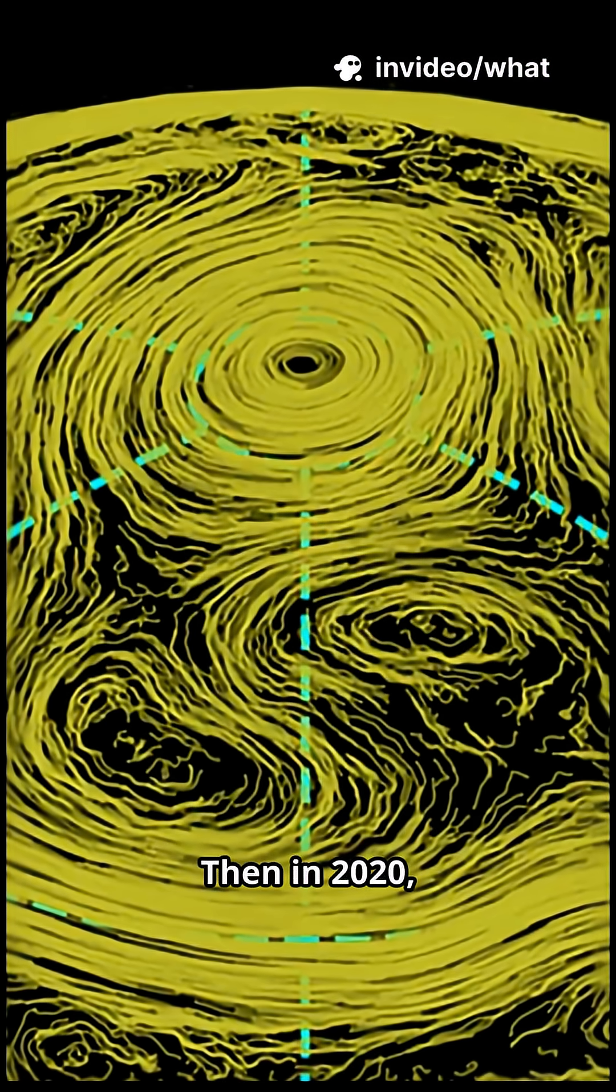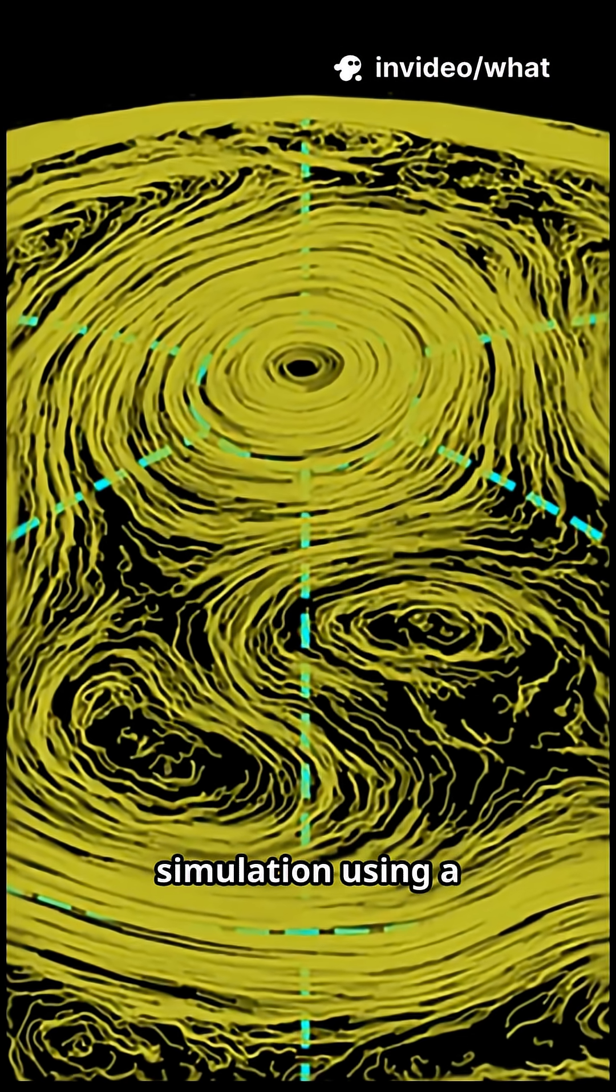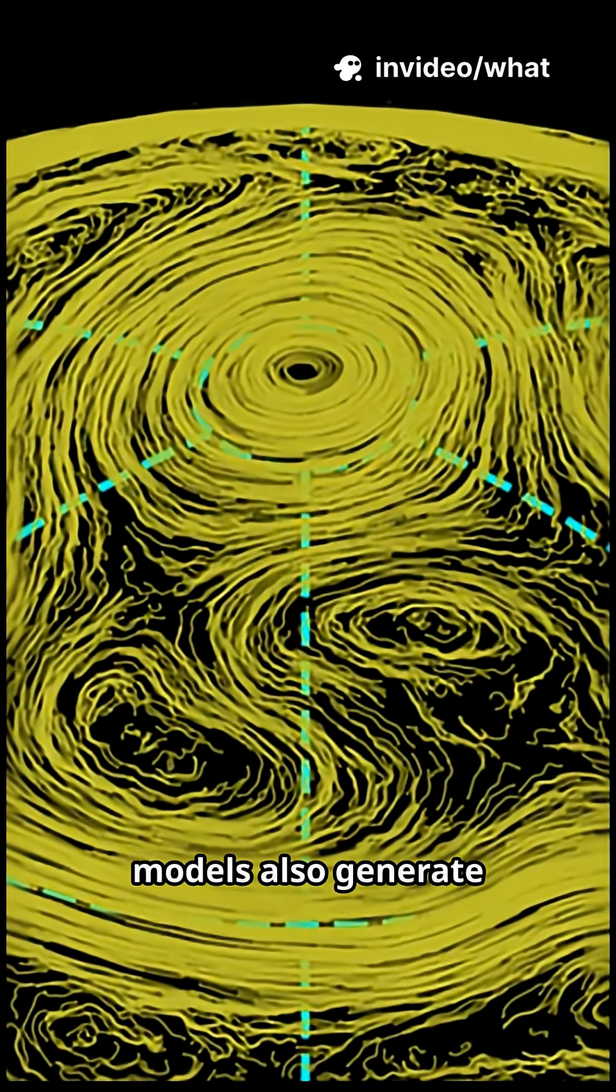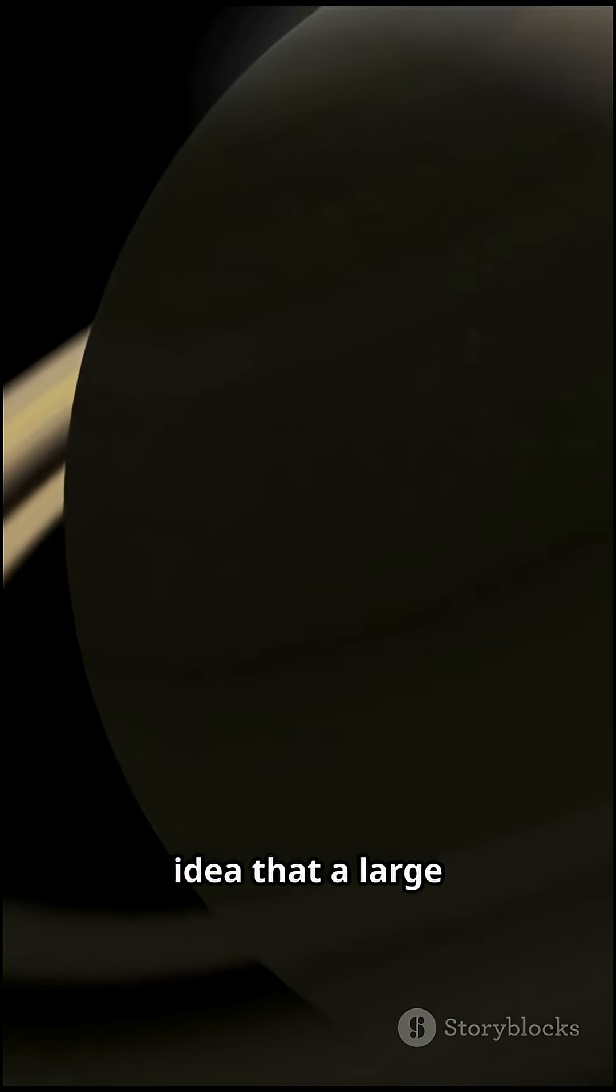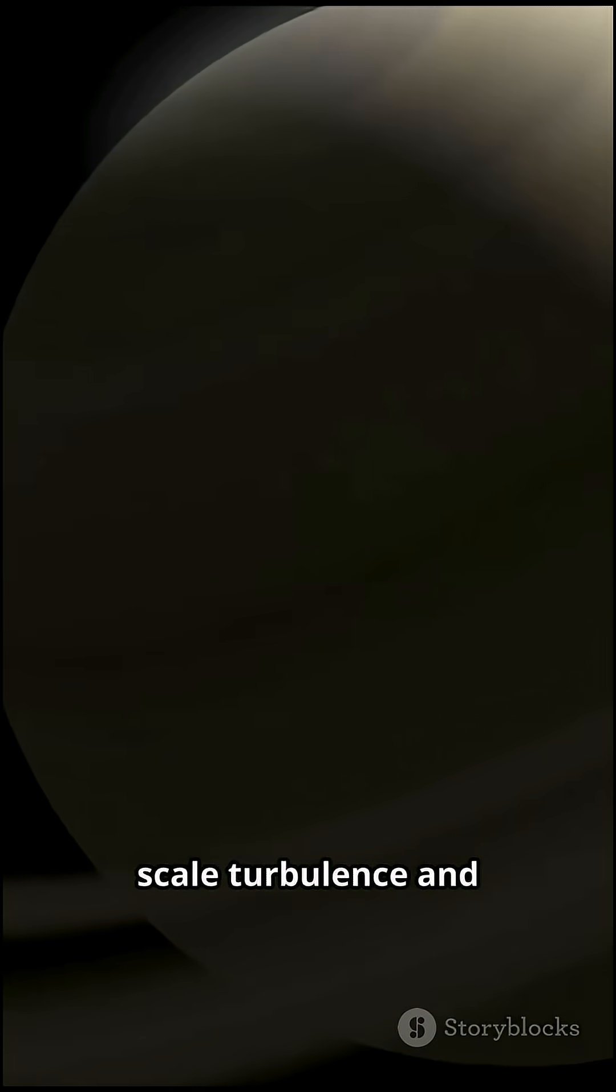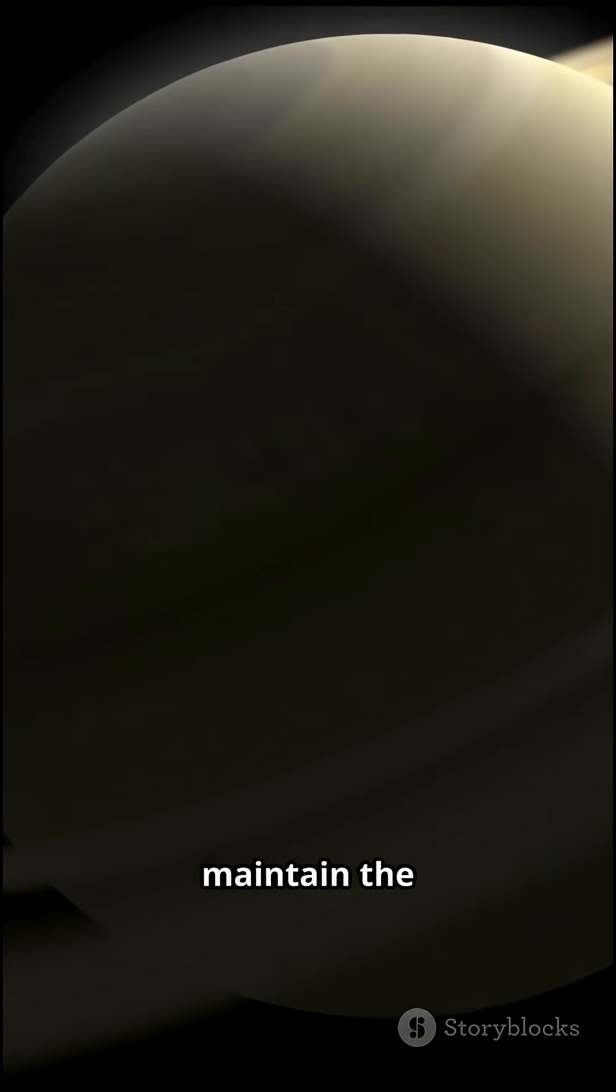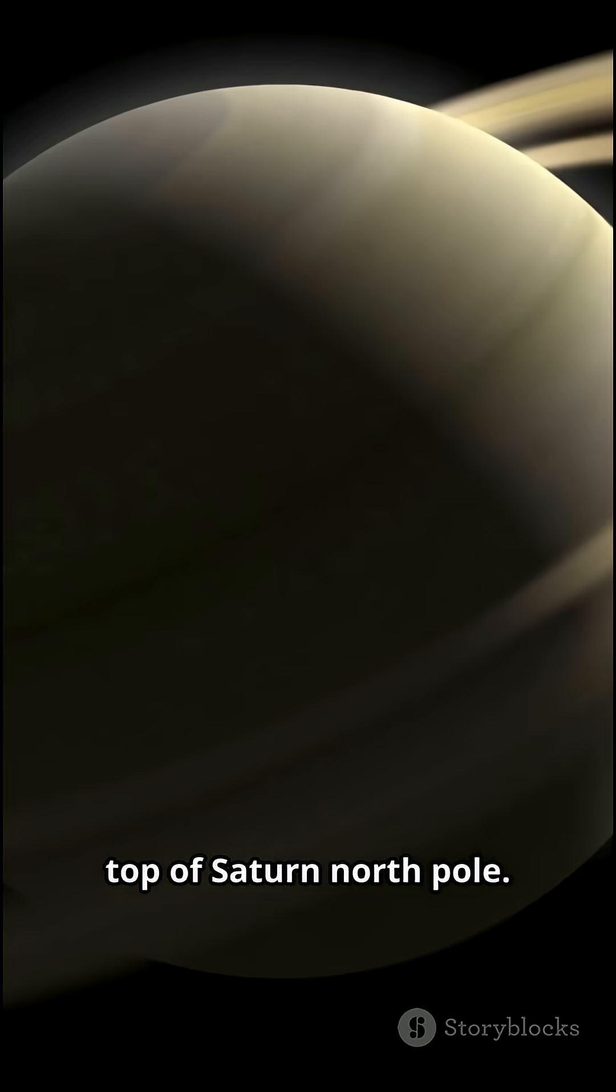Then in 2020, a more advanced 3D simulation using deep convection models also generated a similar flow pattern, which supports the idea that large-scale turbulence and vortex help to maintain the hexagonal shape on top of Saturn's north pole.